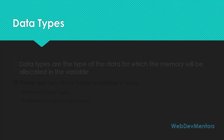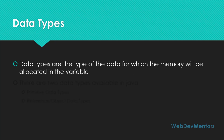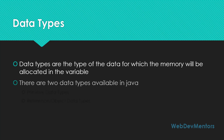Data types are the type of data for which the memory will be allocated in the variable. You have to mention the type of data the variable has to be created for. There are two data types available in Java: one is the primitive data types and the next is the reference or object data types.